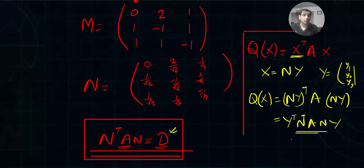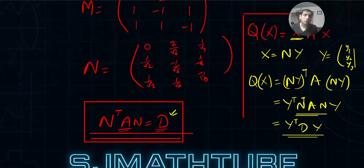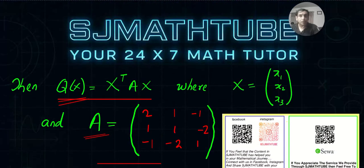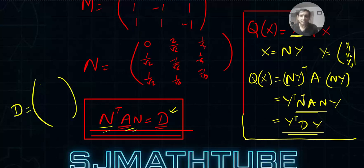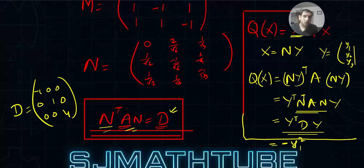Since y^T D y is the quadratic form of D, and D is the diagonal matrix of eigenvalues, this becomes the canonical form. The diagonal matrix D has eigenvalues −1, 0, 1, 4 on the diagonal — so the canonical form is: Q = −y1² + y2² + 4y3².